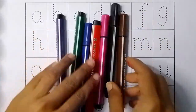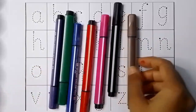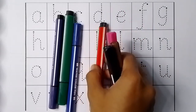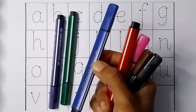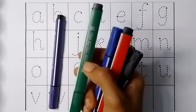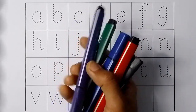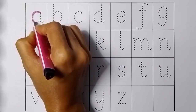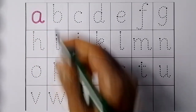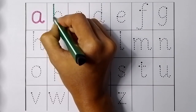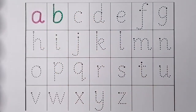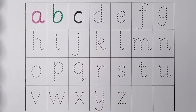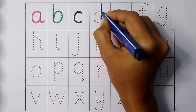Colors: brown, black, pink, red, blue, green, purple. A for apple, B for bowl, C for cat, D for dog.